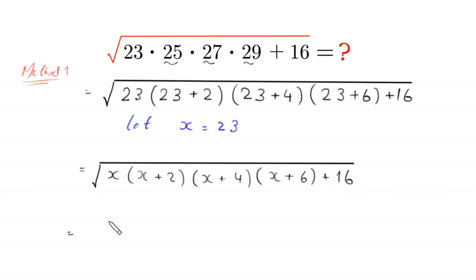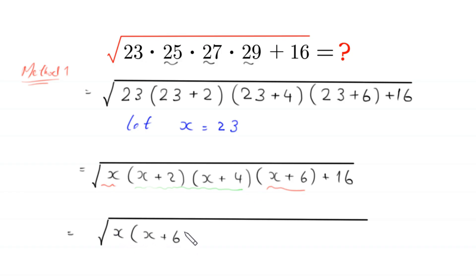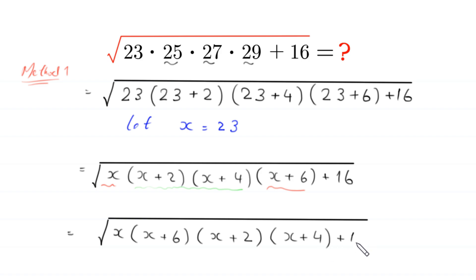Next, we combine pairs: square root of x(x+6) times (x+2)(x+4) plus 16.